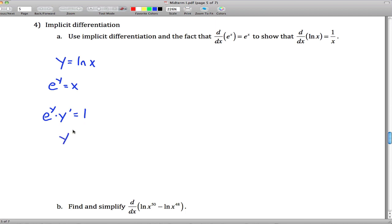So if we solve this for y prime, we get y prime equals 1 over e to the y, which if you want to simplify it, e to the y is equal to x. So the final answer is y prime equals 1 over x, which is exactly what we've got up here. It's good stuff.